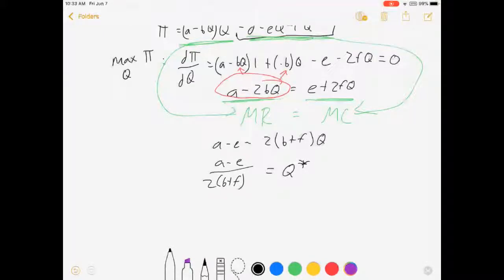Now we can solve for the profit maximizing P by substituting this into our demand curve.